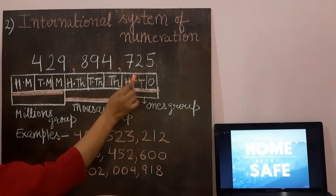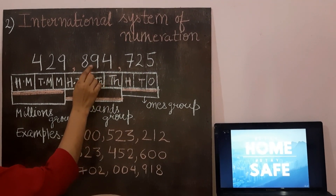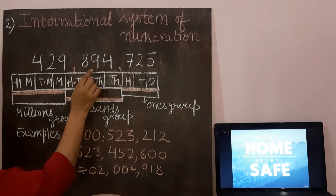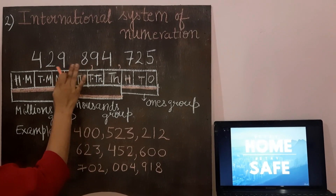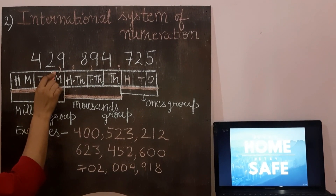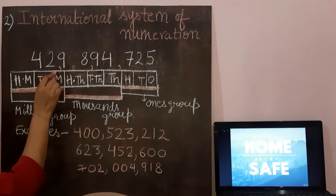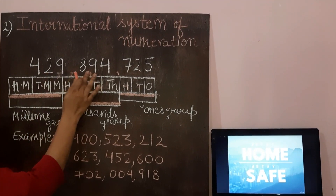When the commas are placed after two numbers from the right — like this, like this — then this becomes the Indian system of numeration.